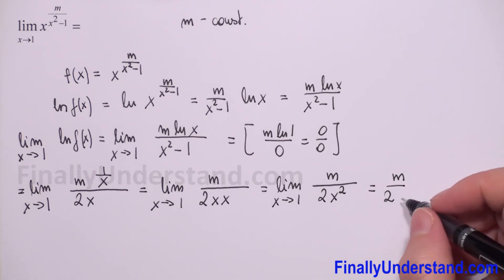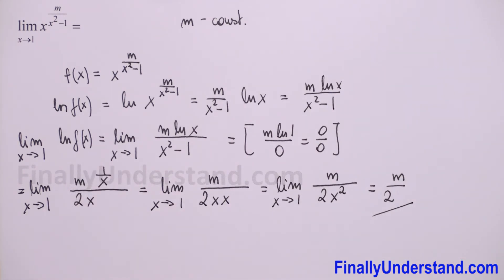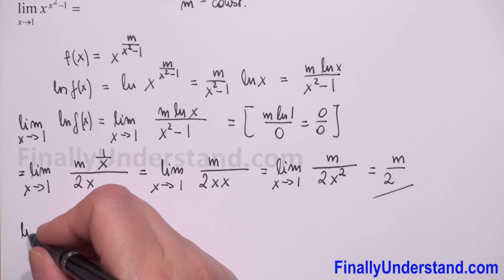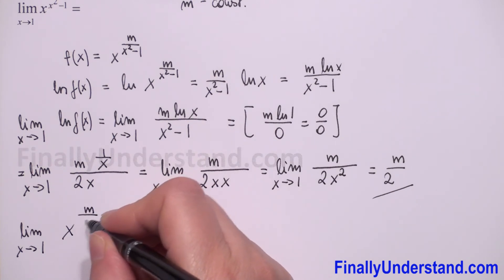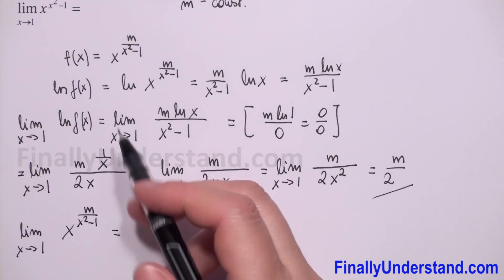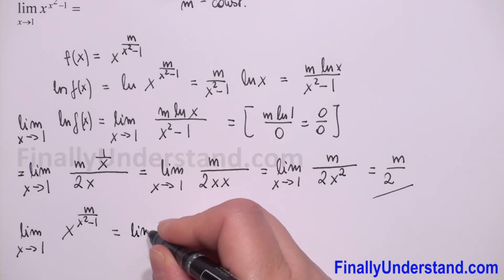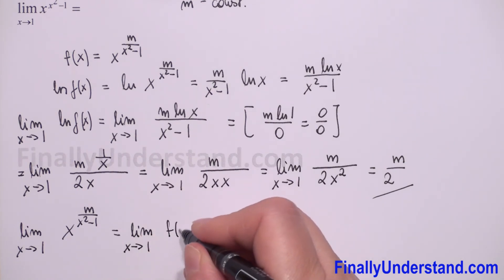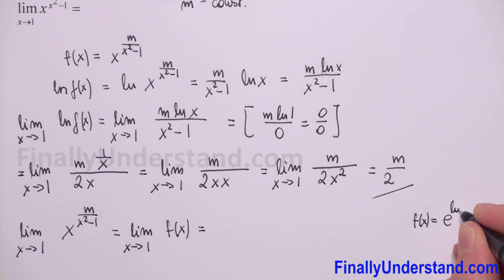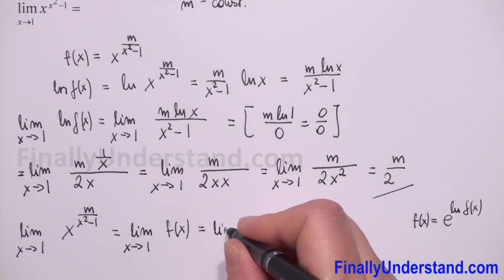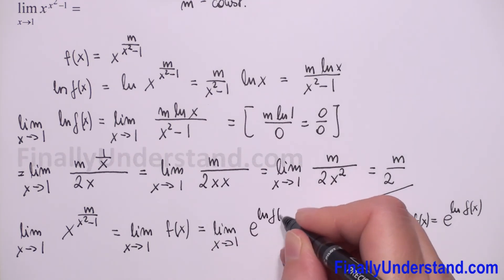So the limit of natural logarithm of f of x equals m over 2. Now we need to find the limit as x approaches 1 of x to the power m over x squared minus 1, which equals f of x. We use the formula: f of x equals e to the power of natural logarithm of f of x. So the limit as x approaches 1 of f of x equals the limit as x approaches 1 of e to the power natural logarithm of f of x.